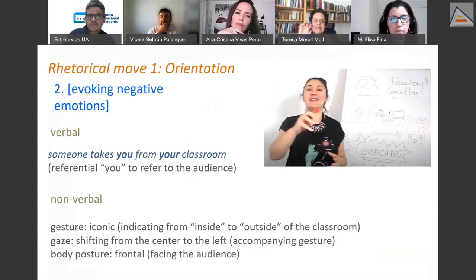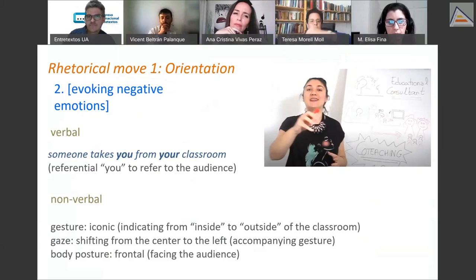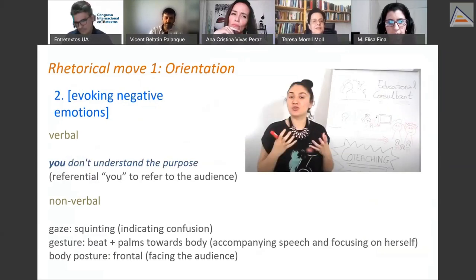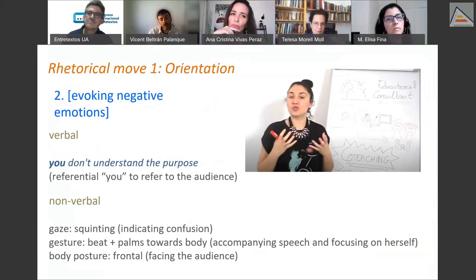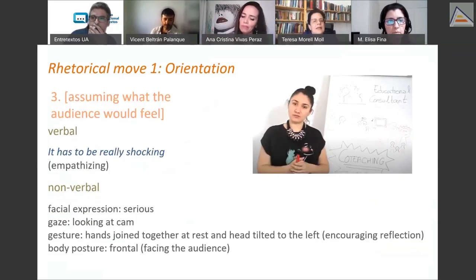Her gaze shifts from center out to the left. Then she continues with 'you don't understand the purpose' — notice her facial expression: she's squinting her eyes and her hands are towards her body, accompanying the speech with a confused look. Finally, in this orientation move, she assumes what the audience would feel, pauses to allow reflection, and says 'it has to be really shocking,' putting on a serious face while joining her hands and tilting her head to the left.